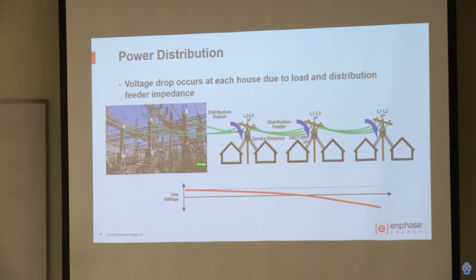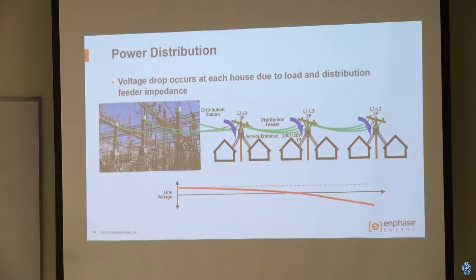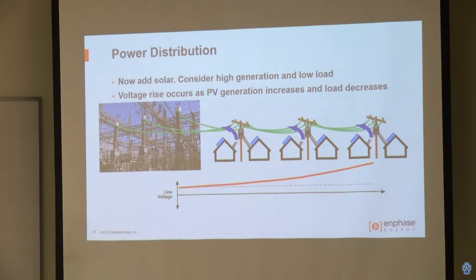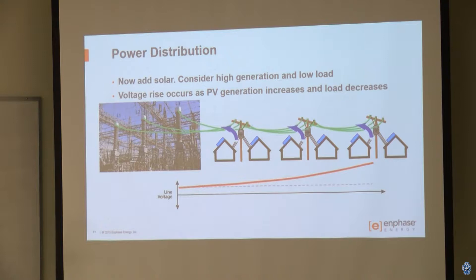Now, let's say we add solar to the whole thing. Solar is generating energy, and it's at its peak during the day when the sun is out — but most of us are at work, so the load is low. Eventually you start feeding current backwards, and what that does is raise the voltage at the end of the feeder. You have wide extremes between the fully loaded case and the fully generating case. Voltage rise occurs as PV generation increases and load decreases.